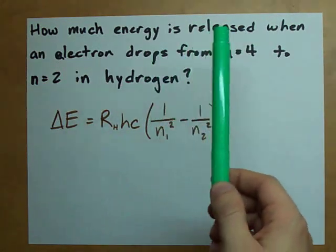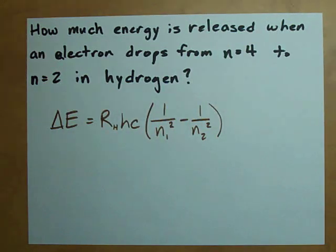Question. How much energy is released when an electron drops from n equals 4 down to n equals 2 in hydrogen?